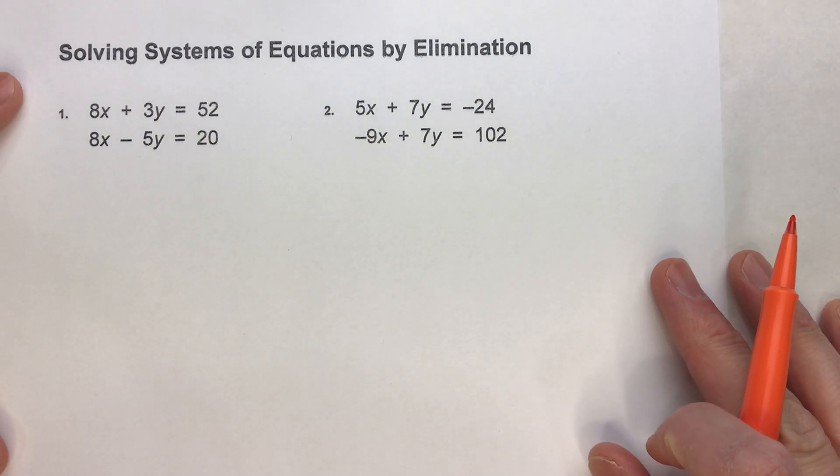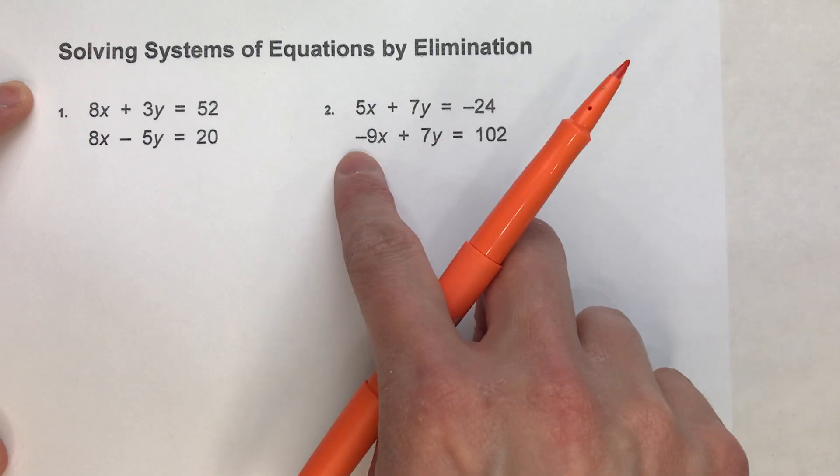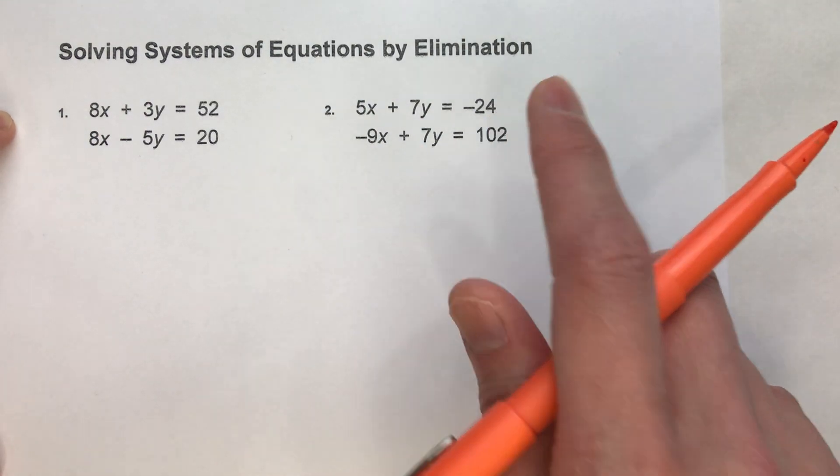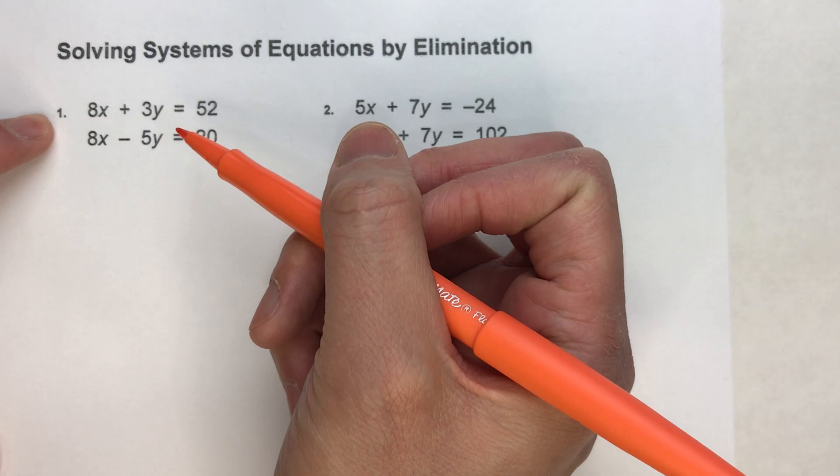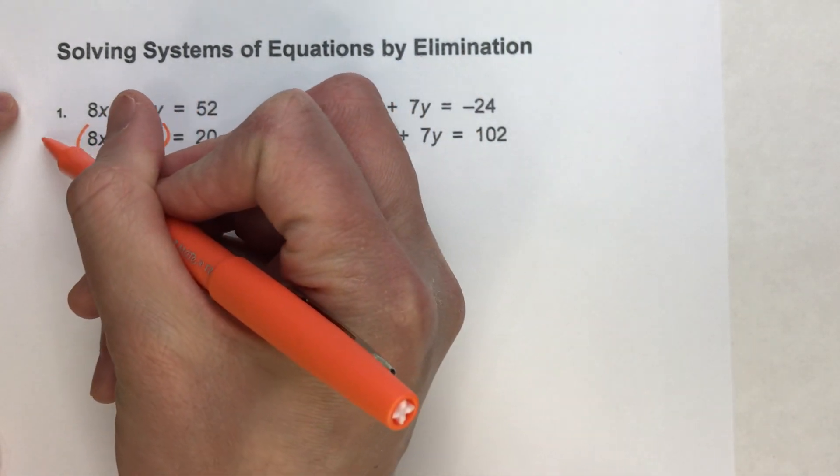Instead of subtracting, because sometimes negatives and subtracting gets a little confusing. You can see over here we've got some negatives. Instead, I'm going to do something. I'm going to take one of these equations and multiply both sides of the equation by negative 1.